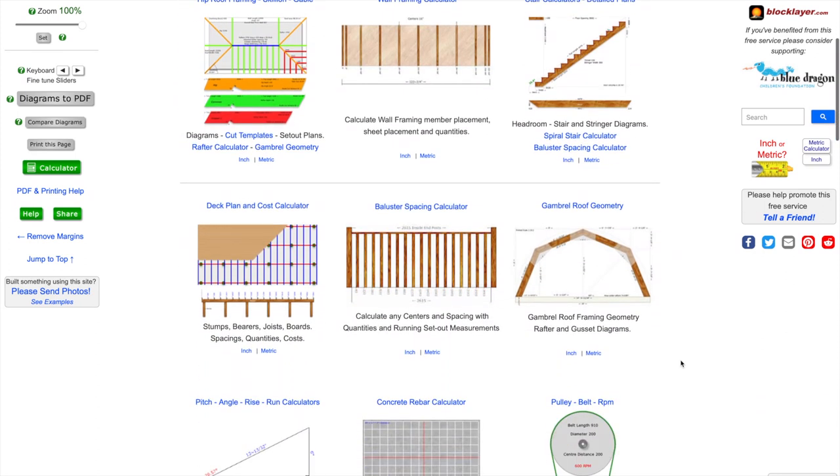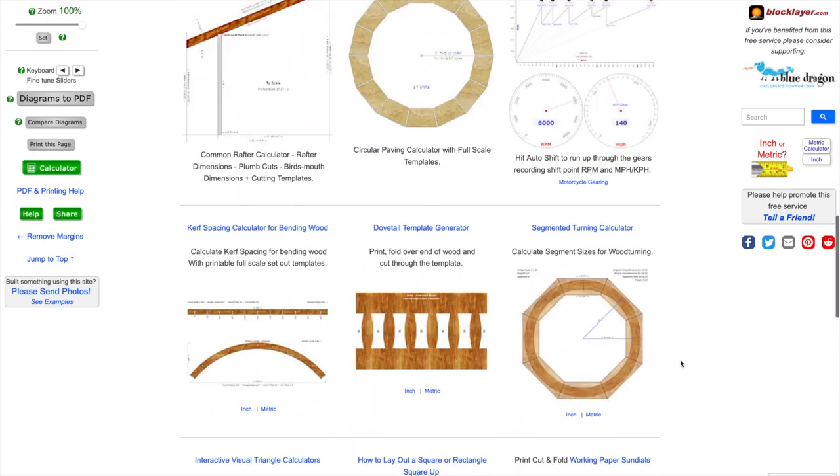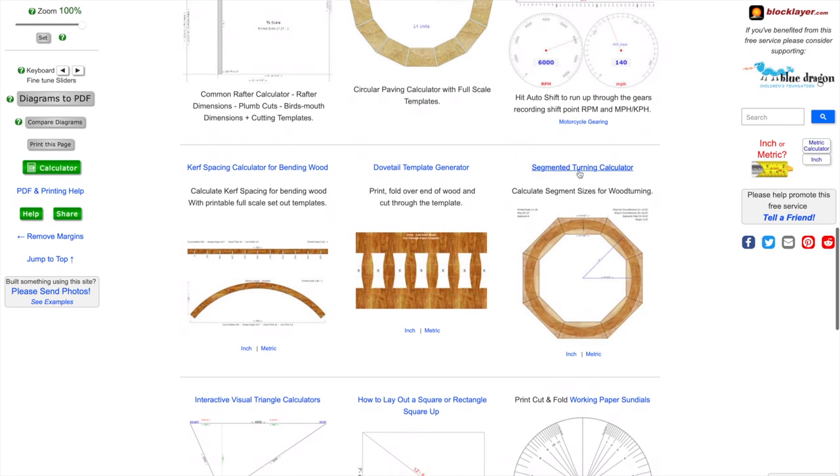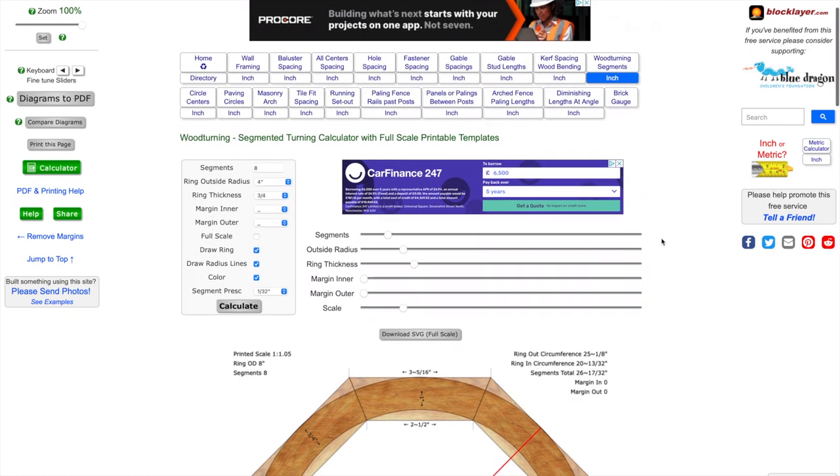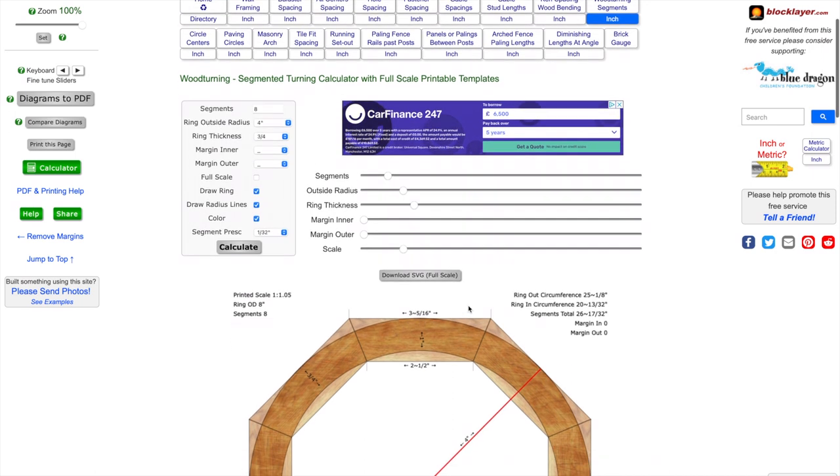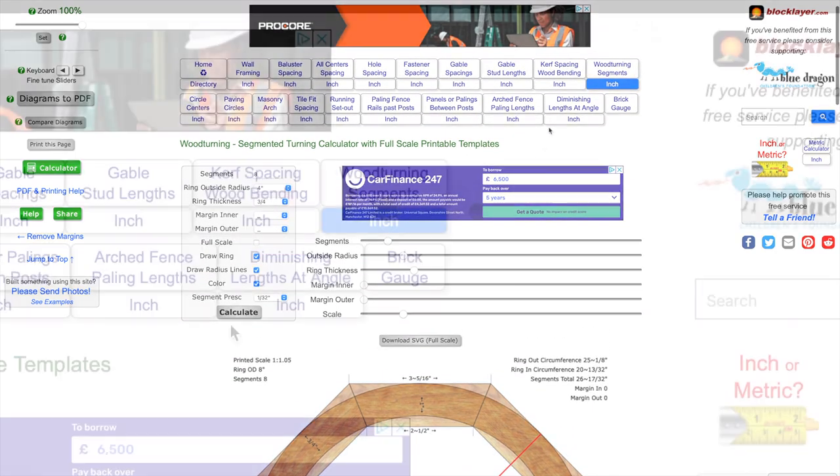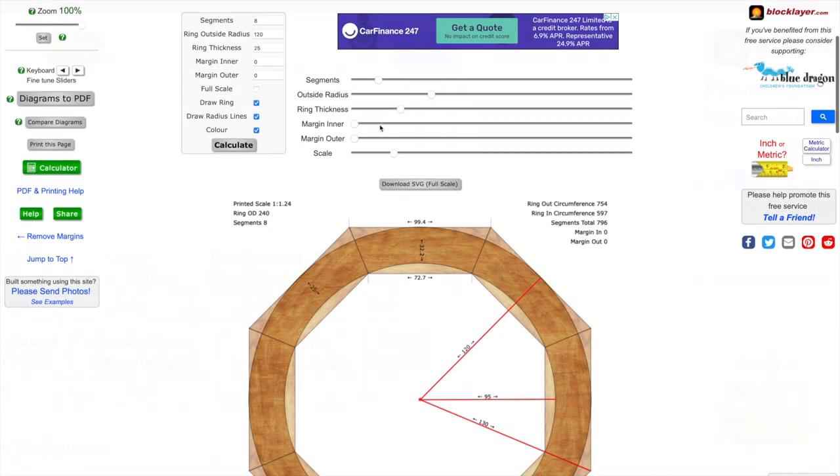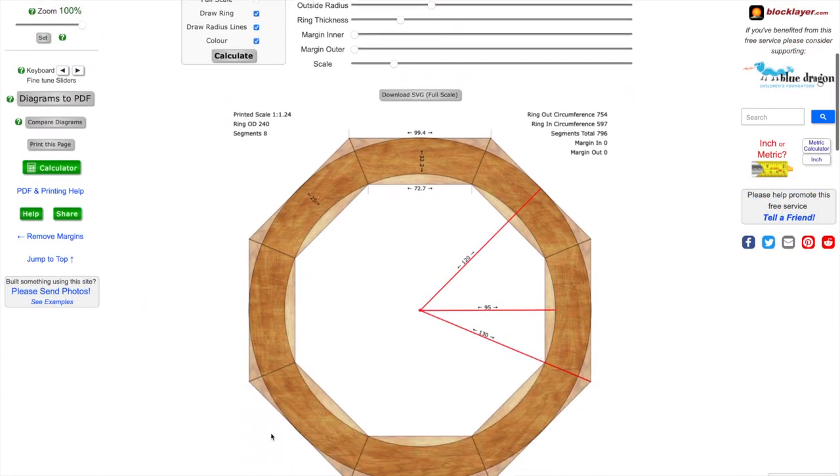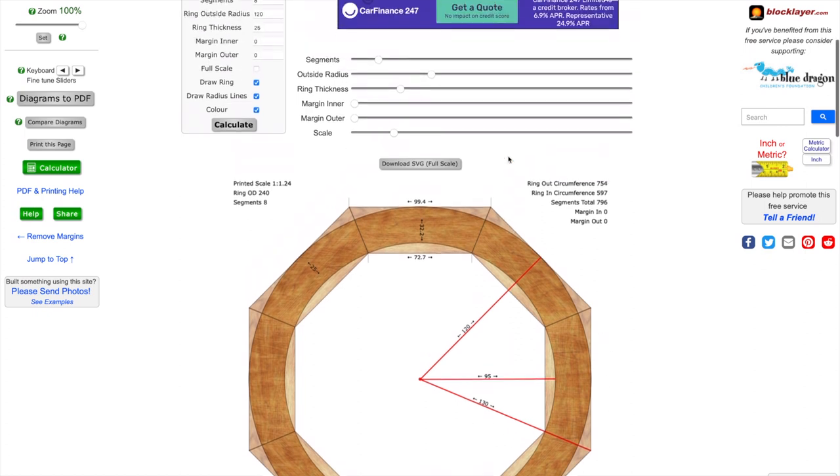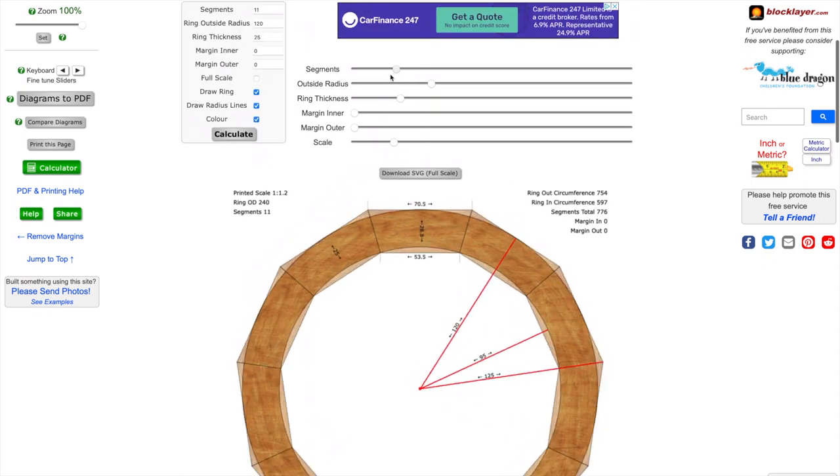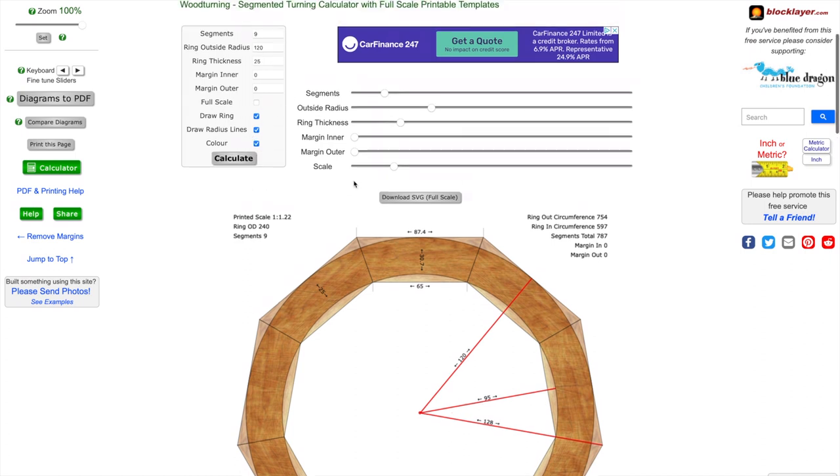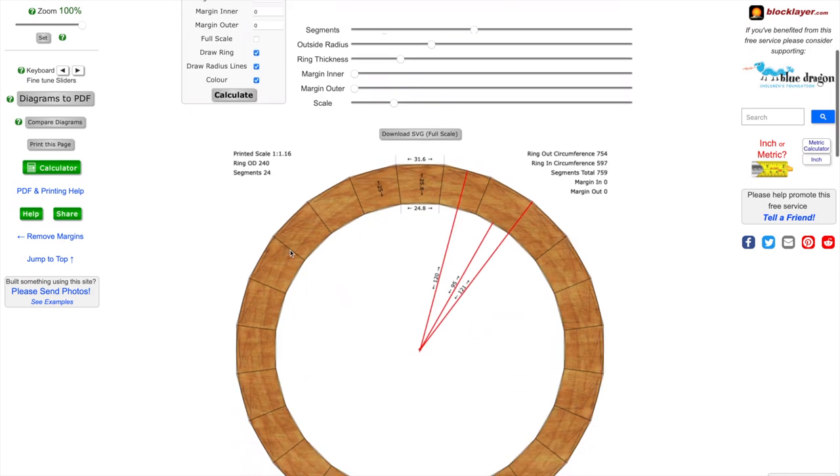So once we're here we'll scroll down and we're looking for segmented turning calculator. So here it is and so we just click on it and it will take us to this page. Currently it's in inches but I drew my plan in centimeters, so I'm going to click on woodturning segment. Once I'm here we've got all of the inputs, then we've got what our segmented ring will look like, and then we've also got sliders which will change all of these things. What we want to do is change the segments to the amount of segments we'd like. So I'd like 24 segments, and then we click calculate and that will appear here.